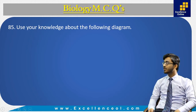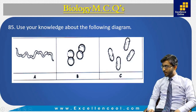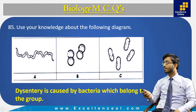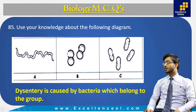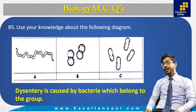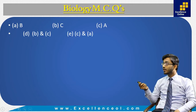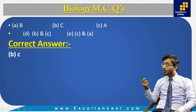Next MCQ 85: use your knowledge about the following bacterium diagram. Inside A we have spiral-shaped bacteria, inside B we have oval and spherical shaped bacteria which are cocci, and inside C we have rod-shaped bacilli. Dysentery is caused by bacteria — from chapter 12 of first-year biology, dysentery is the inflammation of the large intestine caused by bacilli and Entamoeba histolytica. So dysentery bacteria are bacilli, which are rod-shaped. The correct answer is C.